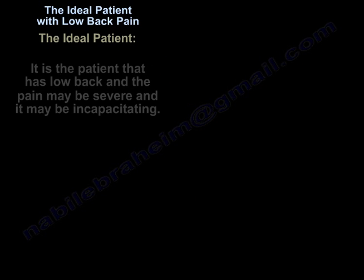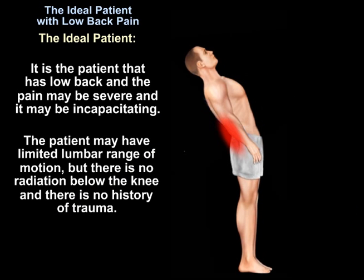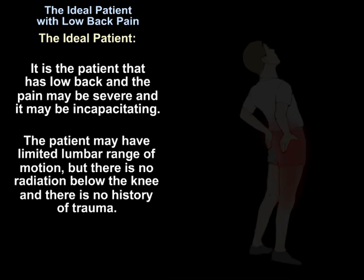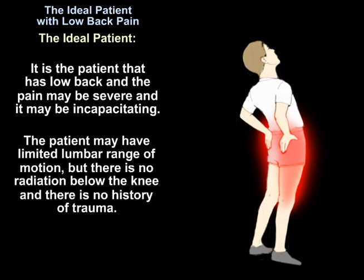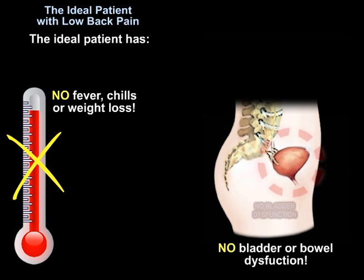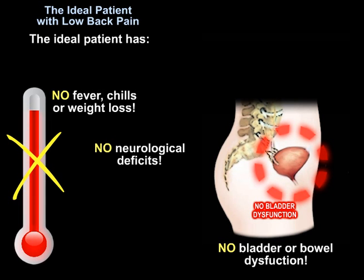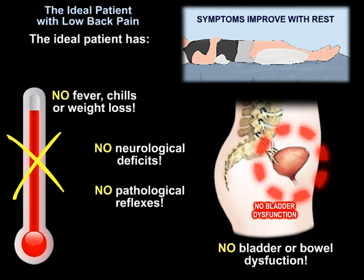The ideal patient has low back pain — it may be severe and incapacitating, and the patient may have limited lumbar range of motion — but there is no radiation below the knee, no history of trauma. The ideal patient has no fever, chills, or weight loss, no bladder or bowel dysfunction, no neurological deficits, and no pathological reflexes. The patient improves with rest.